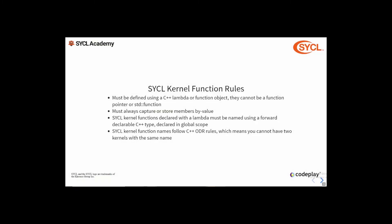Now let's look at some of the rules that apply when defining kernel functions. Kernel functions can only be defined by a lambda expression or a function object — not function pointers or std::function objects. All variables captured in a lambda or stored in a function object must be by value, not by reference. Kernel functions defined with a lambda expression must be named, and the name must be a forward-declarable C++ type declared in global scope. Lastly, kernel function names must follow ODR rules, meaning you cannot have two kernels with the same name.